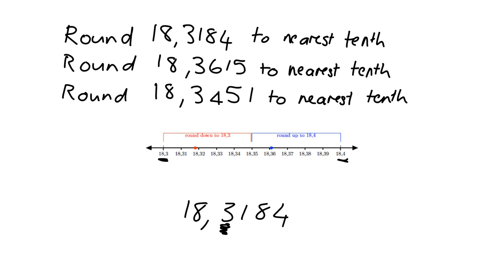What's the halfway point? It's 18.35. So anything below that will get rounded down to 18.3, and anything above 18.35 will get rounded up to 18.4. We look at the number 1 to the right of the tenths digit. Because it is just a 1, we know it's going to be in the area below 18.35, and so it'll get rounded down to 18.3.